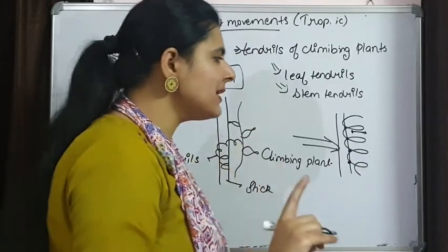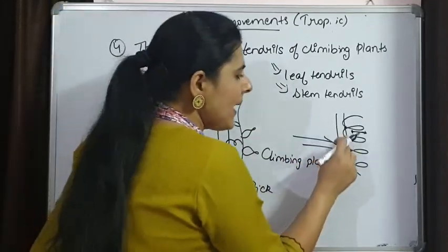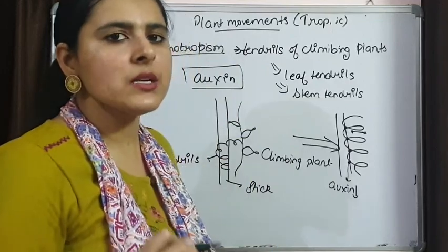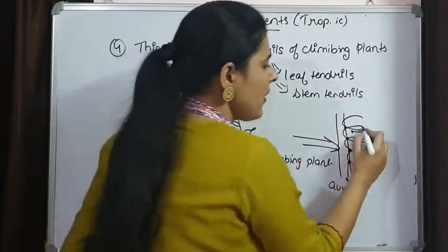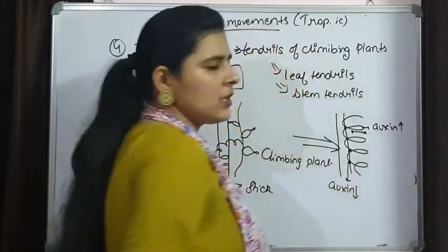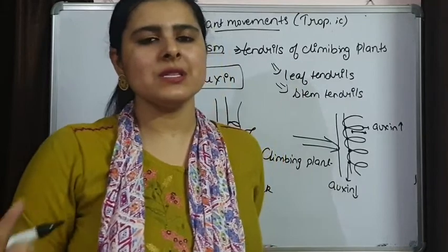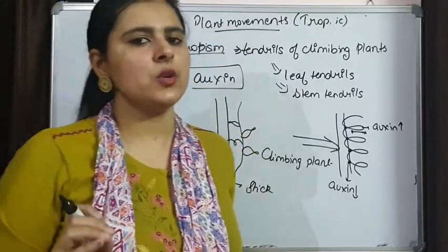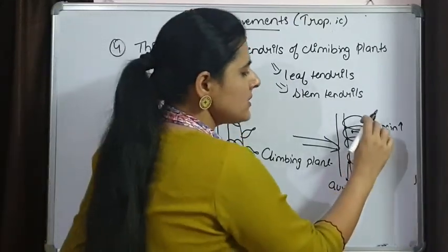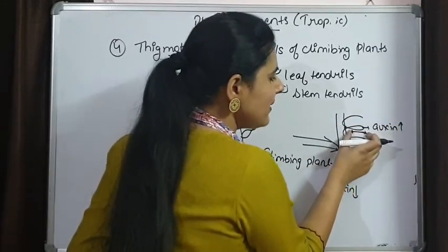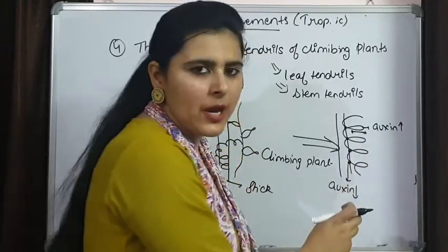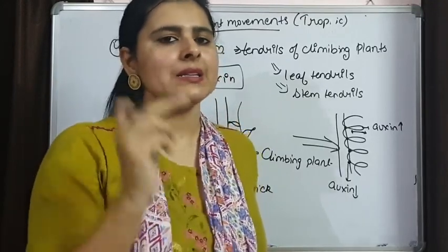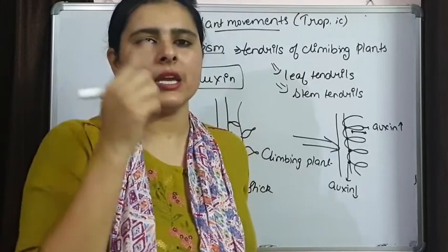The part of the tendril in contact with the support has lower auxin concentration, while the part away from the support has higher auxin concentration. Since auxin promotes growth, the part with more auxin grows more and the part with less auxin grows less. This unequal growth causes the tendrils to grow in a coiled manner rather than straight.